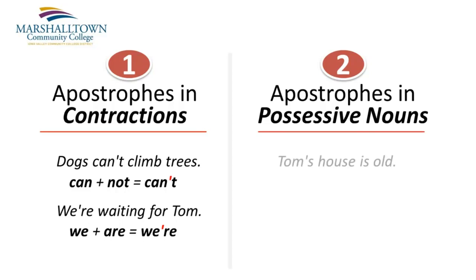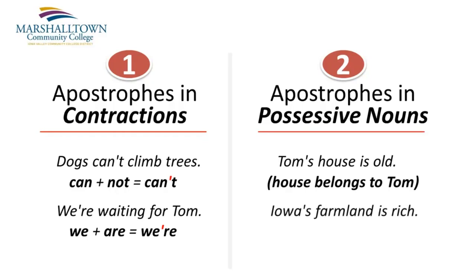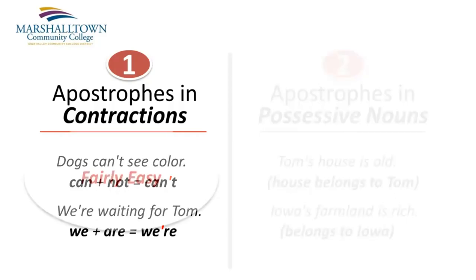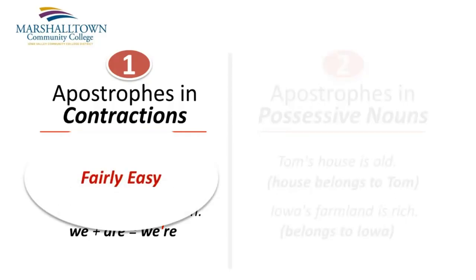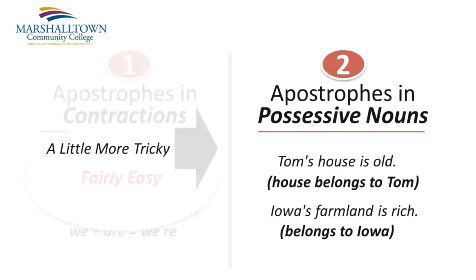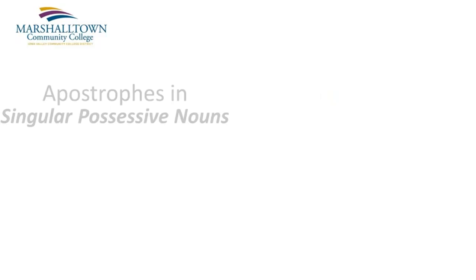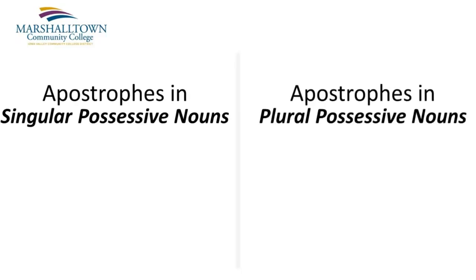With possessive nouns, an apostrophe indicates ownership. Tom's house is old — the house belongs to Tom. Iowa's farmland is rich — farmland belongs to Iowa. Now, apostrophes in contractions are fairly easy to remember. However, remembering how to use apostrophes in possessive nouns can be a little more tricky, because in the English language we have two different kinds of possessive nouns: singular possessive nouns and plural possessive nouns. And each uses apostrophes in a different way.